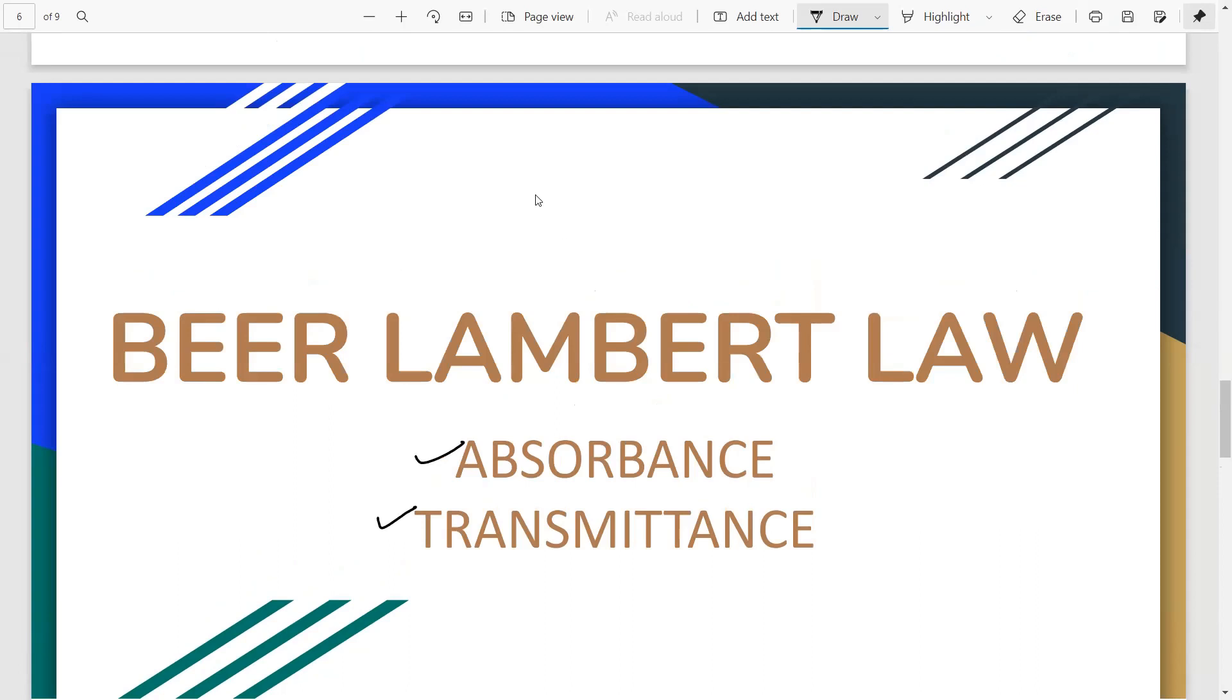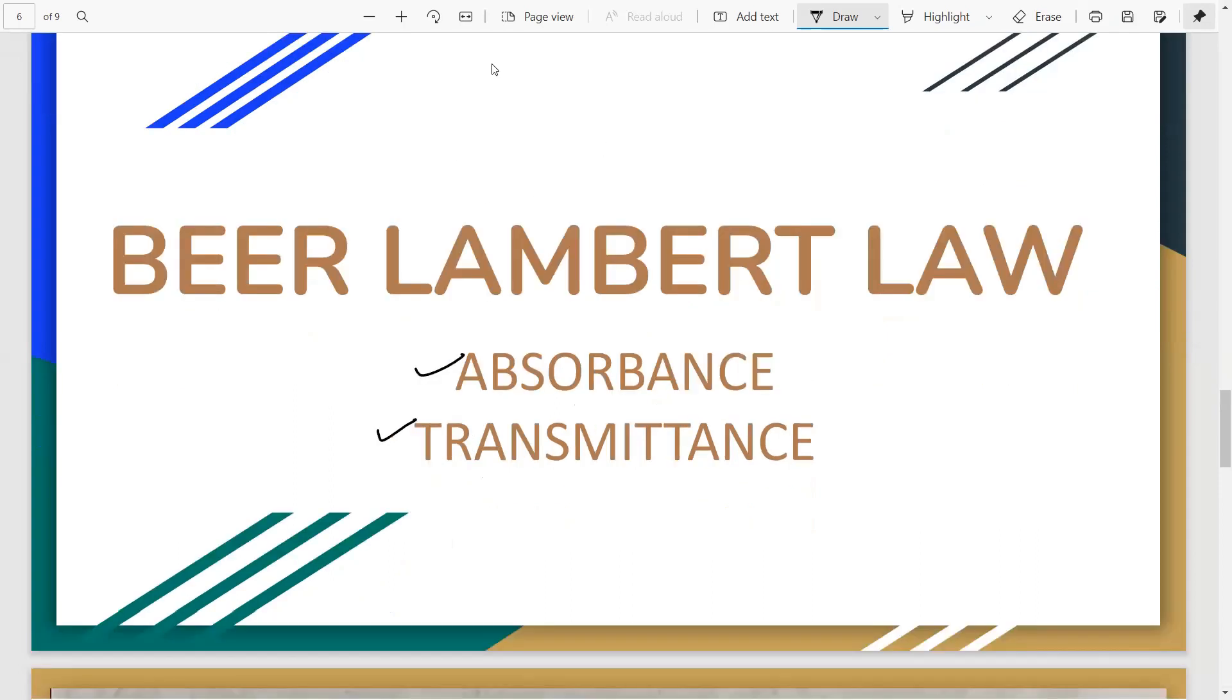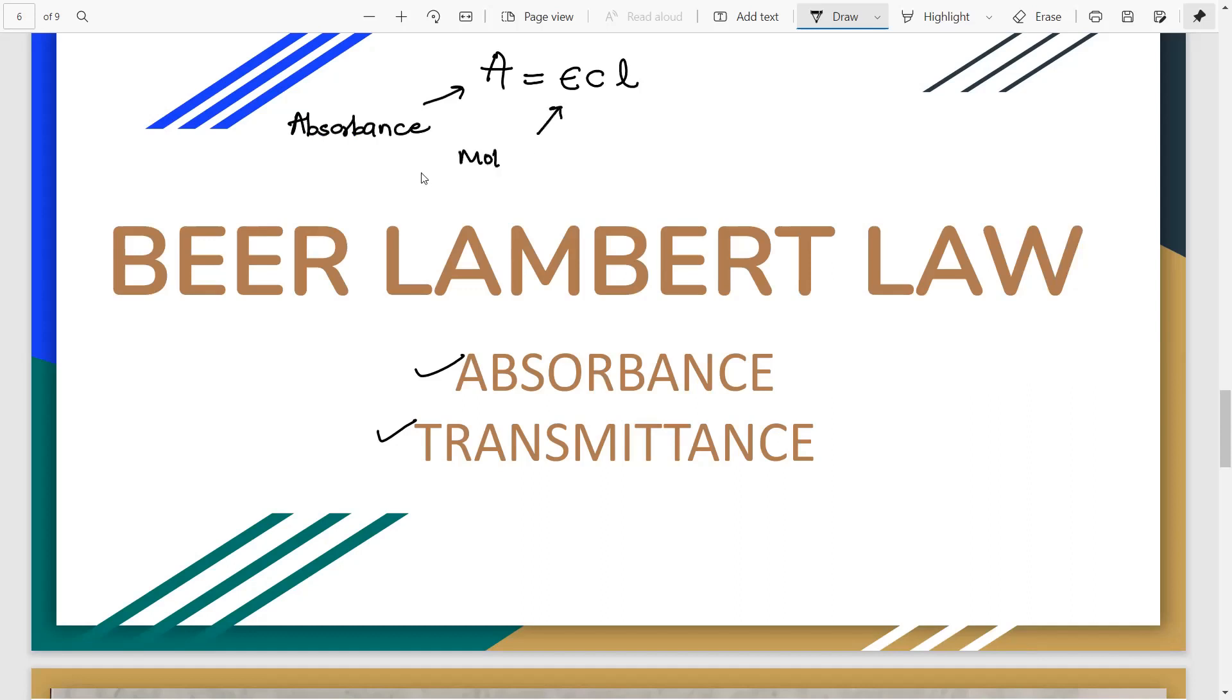So the Beer-Lambert's law can be summarized in one formula: A is equal to epsilon C L. What are all these terms? A here stands for absorbance. Epsilon is the molar extinction coefficient. C here is concentration of the solution and L here is the path length.